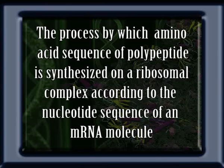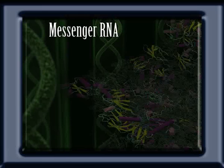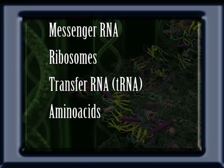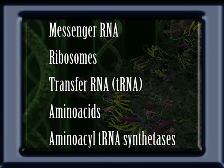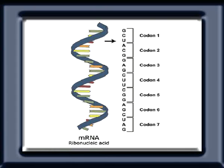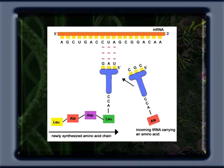Translation can be defined as the process by which the amino acid sequence of a polypeptide is synthesized on a ribosomal complex according to the nucleotide sequence of an mRNA molecule. Before discussing the process of translation, let us describe some ingredients necessary for translation. The main ingredients are mRNA, ribosomes, transfer RNA, amino acids, and aminoacyl synthetase enzymes. Messenger RNA is an RNA molecule that serves as a template for protein synthesis, providing the coding sequence of bases that determines the amino acid sequence in the resulting polypeptide chain. The whole information regarding the polypeptide is coded in it and decoded during translation.